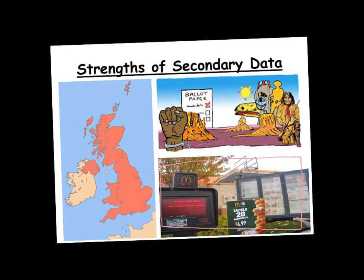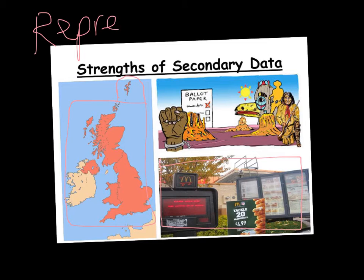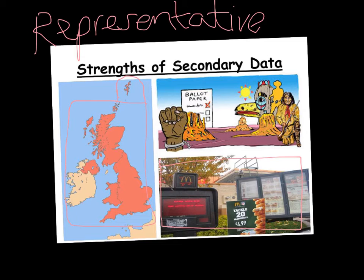Another advantage is that official statistics or data collected by the government covers the whole of the UK, so we can say it's very representative. For instance, every 10 years the government sends a questionnaire to every house in the country — called the census — and by law people have to fill it in. That's truly representative data because it covers the entire target population. Also, secondary data is useful for creating comparisons through time. For example, looking at the role of women within society, you could compare what was happening in the 1960s using secondary data with what's happening today.